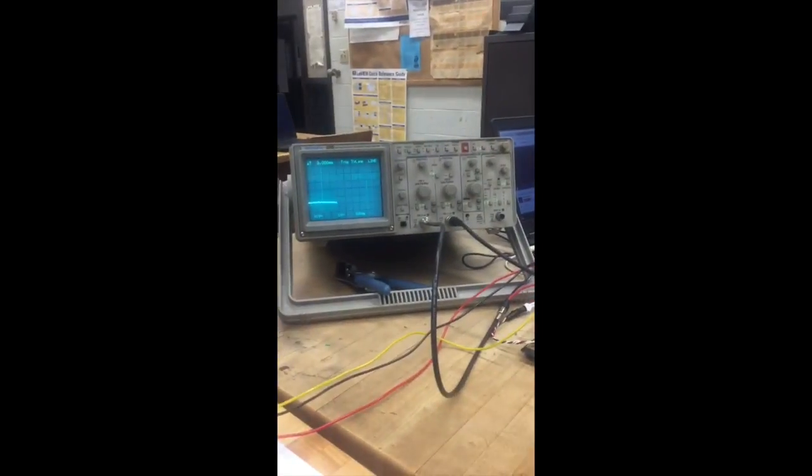And you can see it on the oscilloscope right there. We're going to look at the gain of our lab or the theory. Gain equals V in over V out. And we can set that to negative X capacitance over R. And we're going to ignore this resistor.